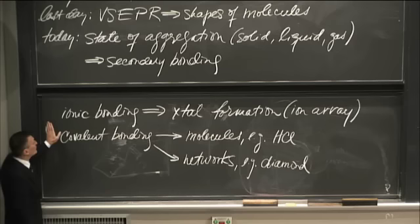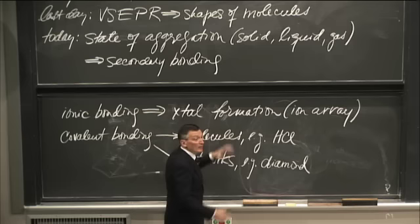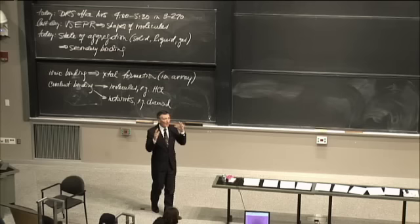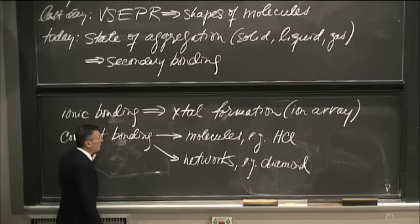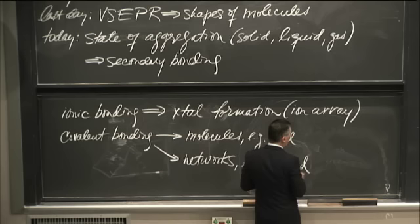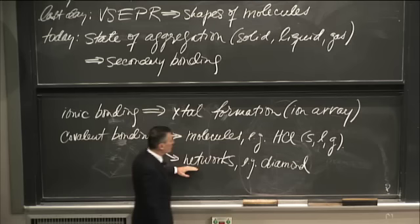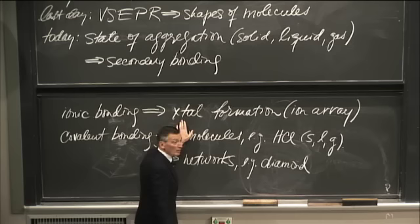Let's reflect on what we've learned. We studied ionic bonding, which necessarily leads to crystal formation because of unsaturated bonds — an ion array of unlimited size. Something big made of ions is going to be a solid at room temperature. With covalent bonding, we have two options: we can make discrete molecules such as HCl, which depending on various factors could be solid, liquid, or gas, or we can make a three-dimensional network like diamond, which is solid at room temperature.